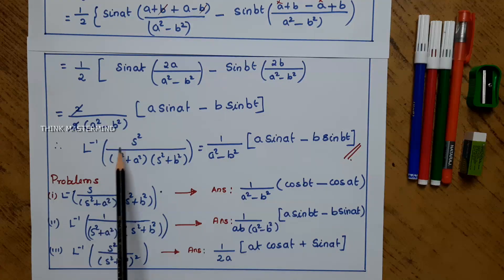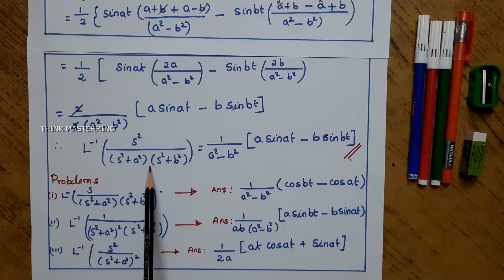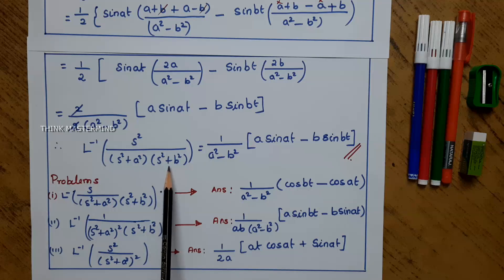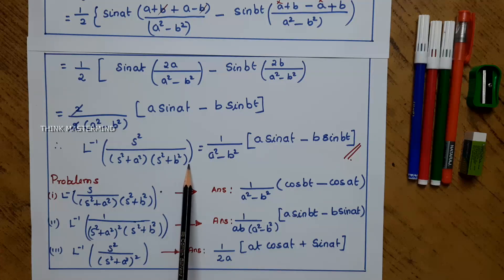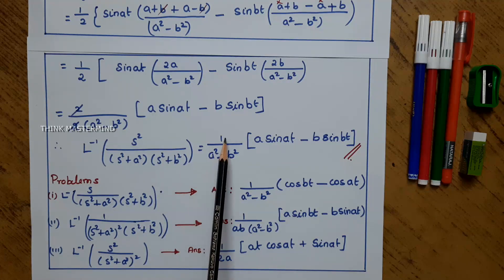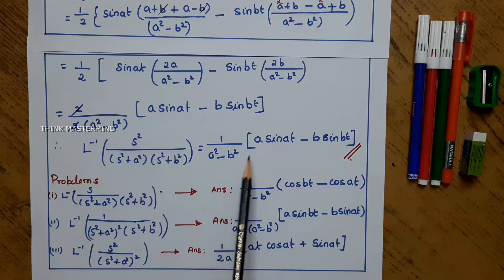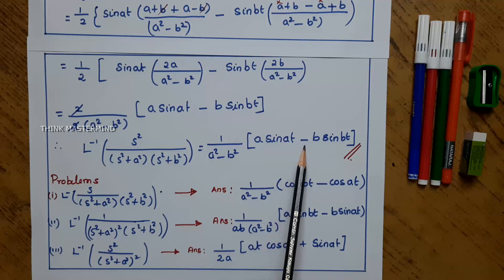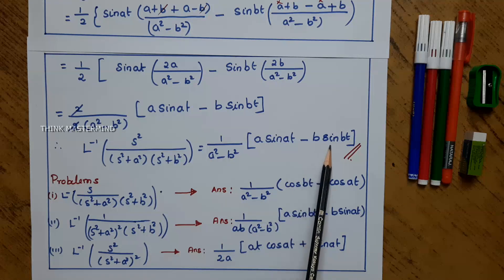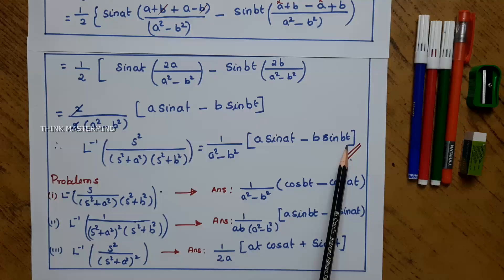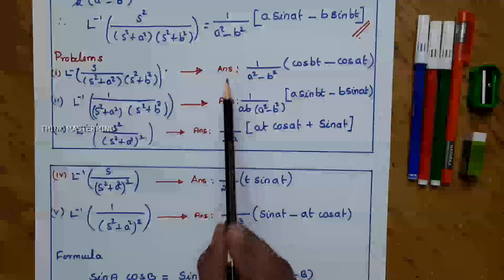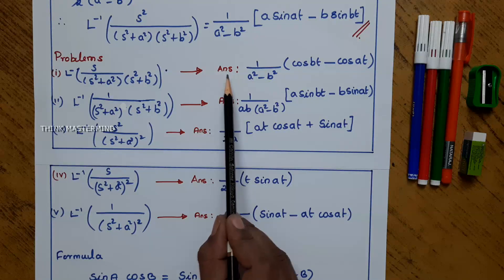So, L inverse of s squared divided by (s squared plus a squared) into (s squared plus b squared) is equal to 1 divided by (a squared minus b squared) into (a sin(at) minus b sin(bt)).